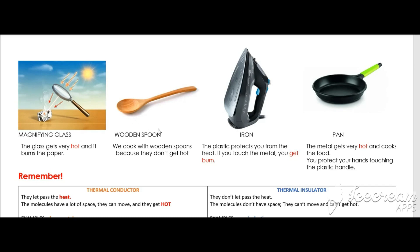A wooden spoon — because it's made of wood, when we cook with the wooden spoon, we don't get hot, because the wood doesn't get hot. It's a thermal insulator.